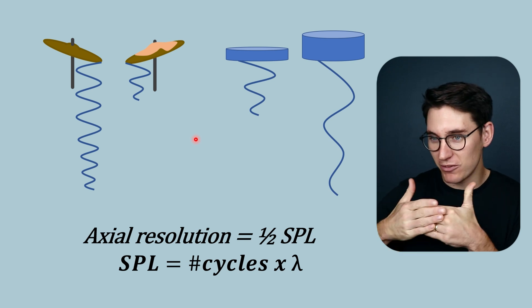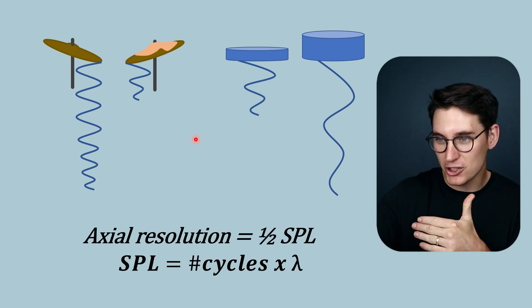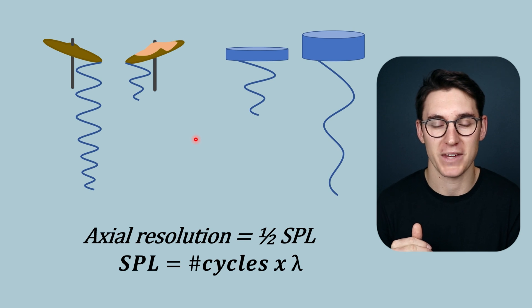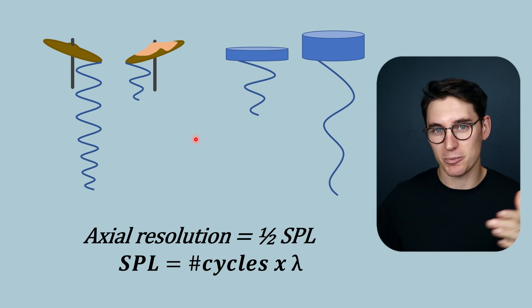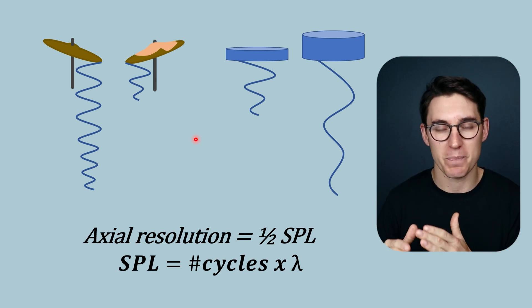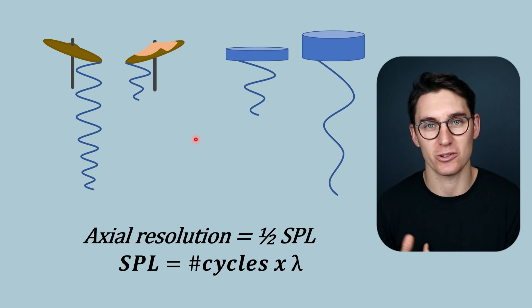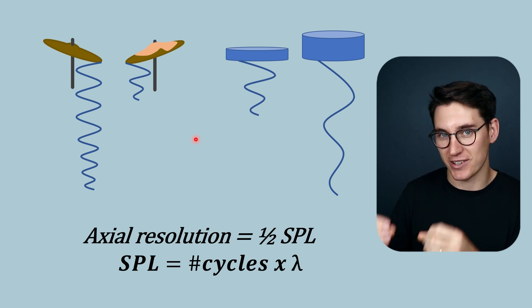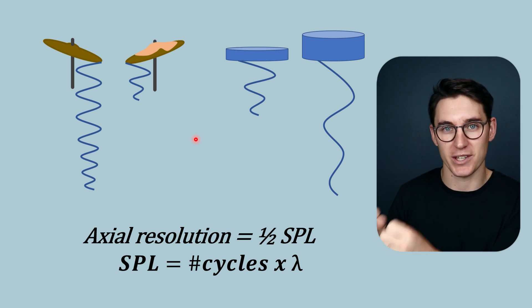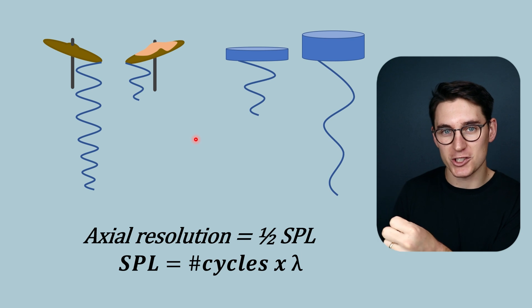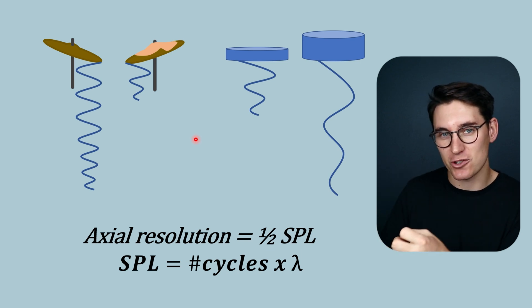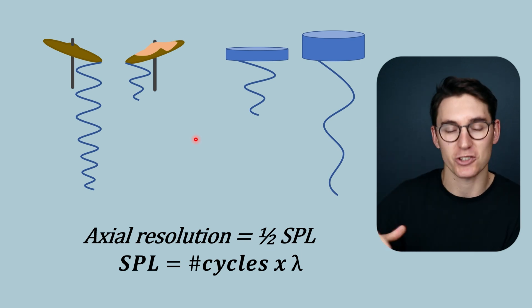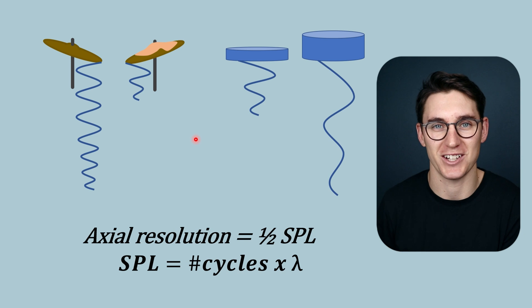So now we've looked at axial resolution in the longitudinal, depth plane of our ultrasound beam. Next we're going to look at lateral resolution and elevational resolution — how we can differentiate objects at the same depth but at different positions within the lateral and elevational portions of the ultrasound beam.